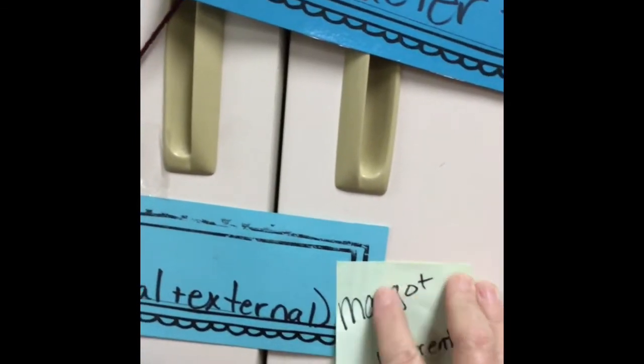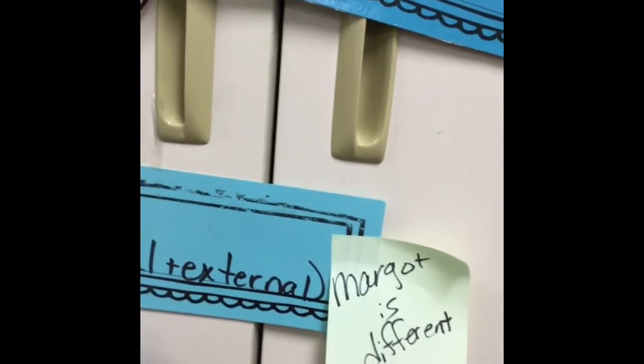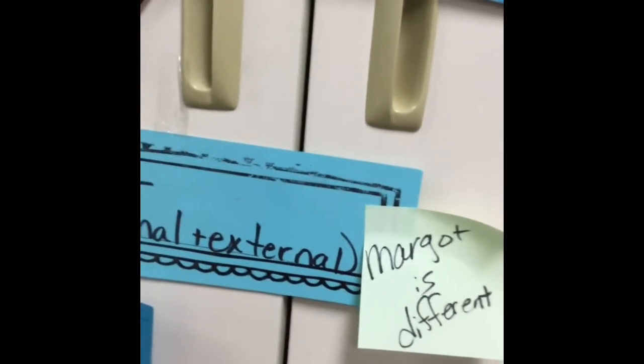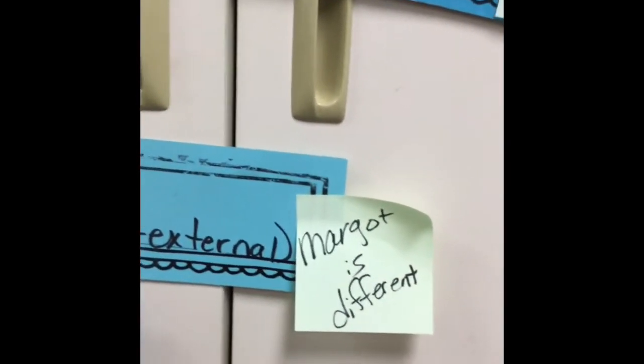You need to read the story and find the first sentence that lets us know that Margo is different from everybody else. We know this is a problem because she's bullied because she's different.